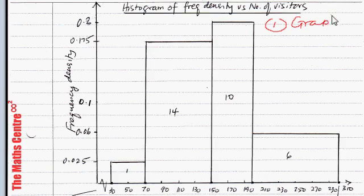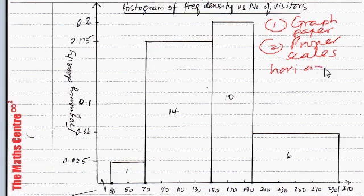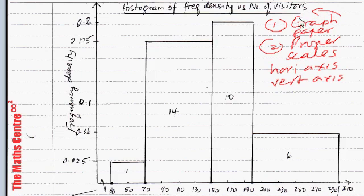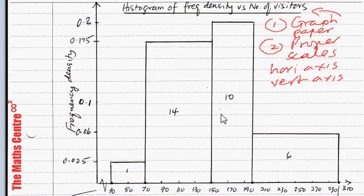Here I have drawn a histogram — let's go through the main points carefully. Number one: please use graph paper. Number two: use proper scales for your horizontal and vertical axes. Also include a title for the histogram; here I have written 'Histogram of frequency density versus number of visitors.' Those are some initial comments to follow when answering questions involving histograms.